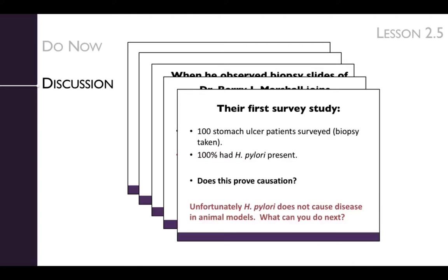Upon closer examination, 100 ulcer patients all had H. pylori, which supports the idea that it's involved in ulcer formation or persistence. But the bacteria did not cause diseases in animal models, so the next step is to design an experiment in humans. The discussion sets the stage for the activity.